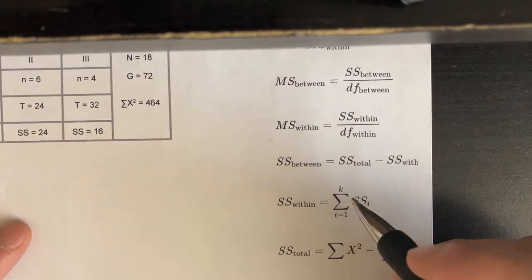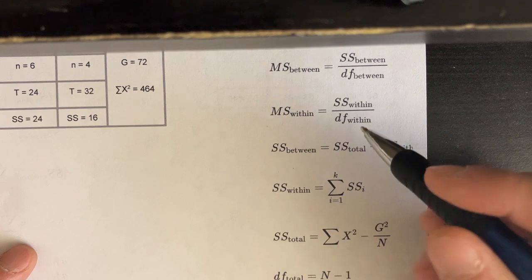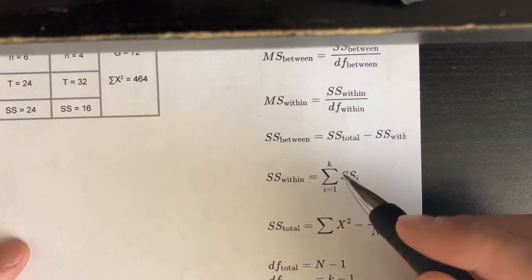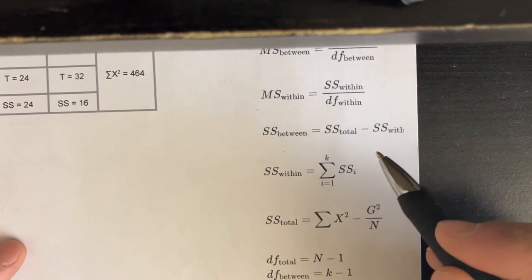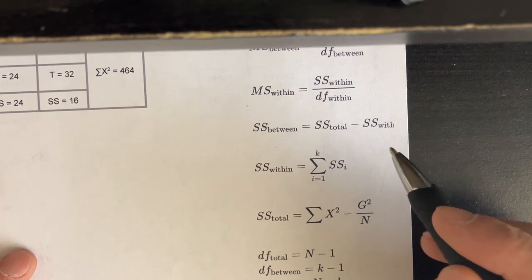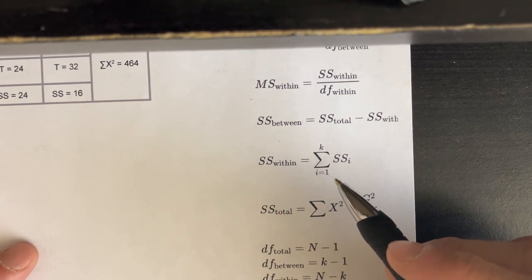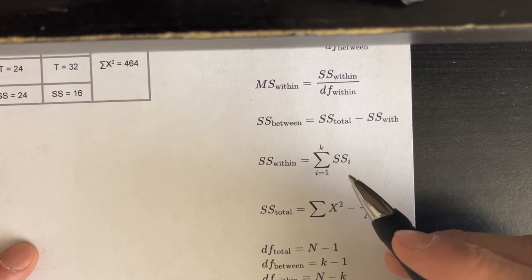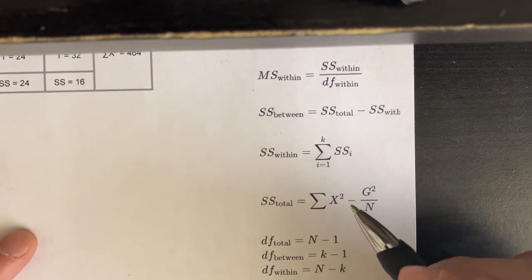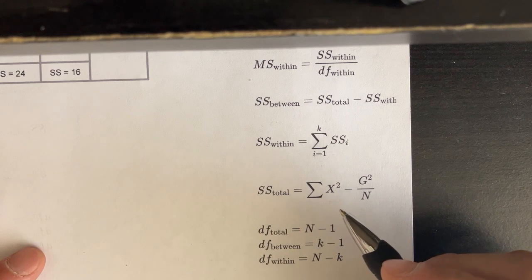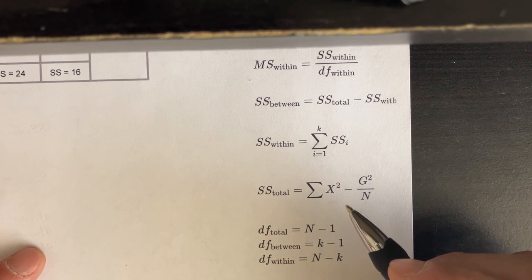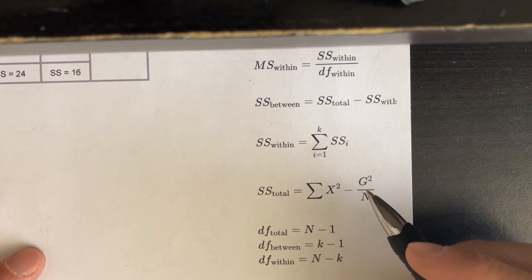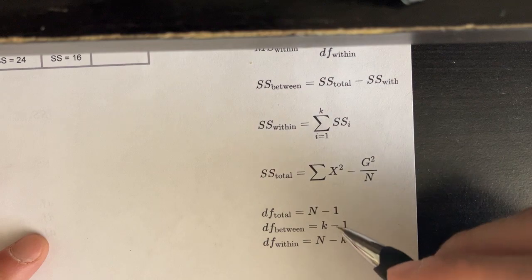I can also see how to find the sum of squares and degrees of freedom. SS between is the difference between SS total and SS within. SS within is found by adding up the individual sum of squares for the three groups. SS total uses the same formula we've seen before, with G in place of the usual symbol, and of course we have the degrees of freedom formulas as well.